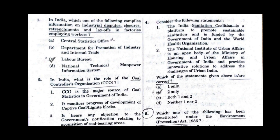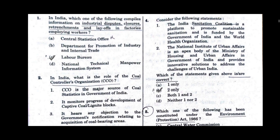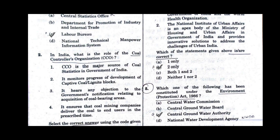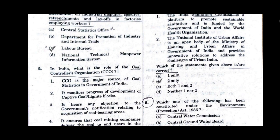Question number 4. Consider the following statements. The Indian Sanitation Coalition is a platform to promote sustainable sanitation and is funded by the Government of India and the World Health Organization. The National Institute of Urban Affairs is an apex body of the Ministry of Housing and Urban Affairs in Government of India and provides innovative solutions to address the challenges of urban India. Which of the statements given above is correct? Option B will be the correct answer: 2 only.